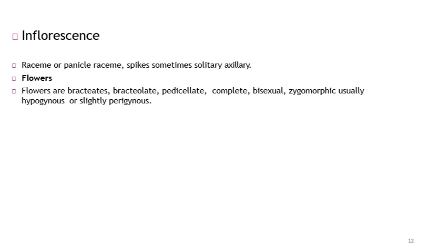In this family, the flowers are bisexual, meaning male and female organs are present in the same flower; or in some cases, staminate or pistillate flowers occur on different plants. In addition to this, the symmetry of the flower is zygomorphic, meaning we cannot cut the flower into two equal halves by any one plane.